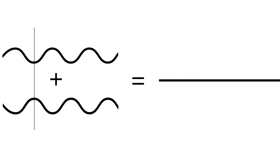These two waveforms are perfectly out of phase. Although they are the same frequency, as one waveform goes up, the other goes down. One is pushing while the other is pulling, and so they cancel each other out. This is called destructive phase interference, and it's like one plus negative one equals zero.